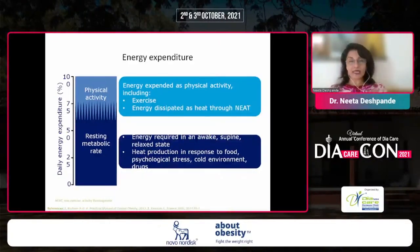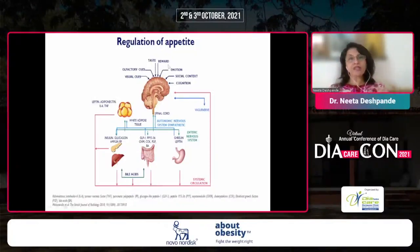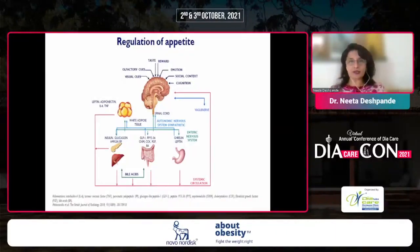Intake of food is not as easy to understand because there is something called appetite regulation. Apart from just hunger, you look at food, smell food, taste food, and feel happy about it — that is the reward part. Then there are emotions which make you eat or not eat, the social context, and cognition. There is a complex interplay, like a symphony orchestra where everything works together to make a person eat, involving many organs producing several hormones.